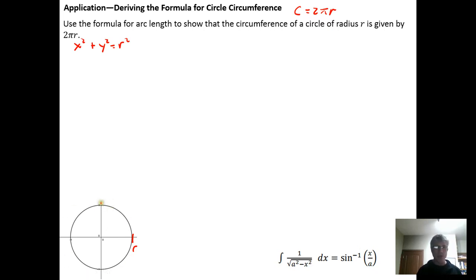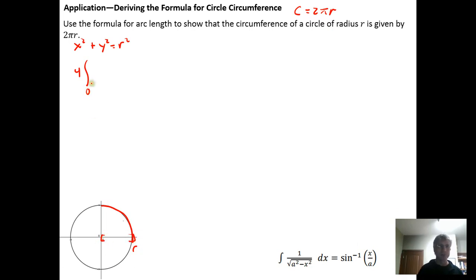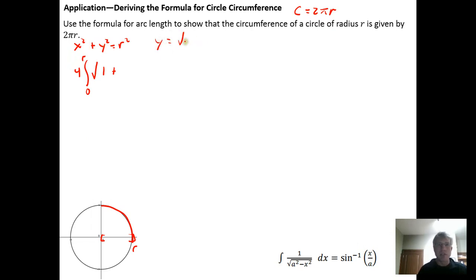To find the distance around the circle, we apply the arc length formula. We do four times the integral for the arc length in quadrant one, running over the interval from zero to r. The arc length formula is the square root of one plus y prime quantity squared dx. We solve for y to get y equals the square root of r squared minus x squared.